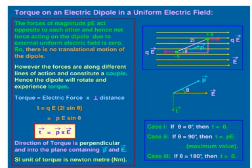The torque equals the electric force times the perpendicular distance between the two forces. Mathematically, torque tau equals QE into 2L sin theta. But Q into 2L is P, therefore torque equals PE sin theta. In terms of vectors, the torque is the cross product of the dipole moment and the electric field.